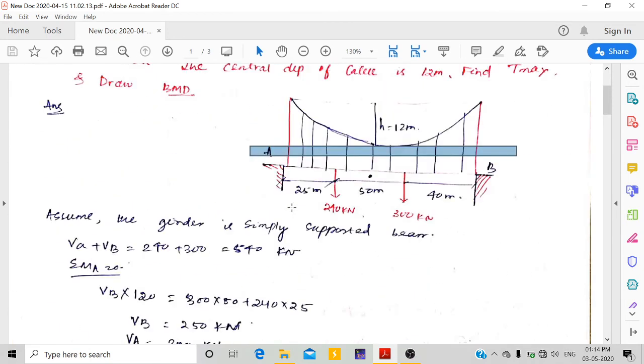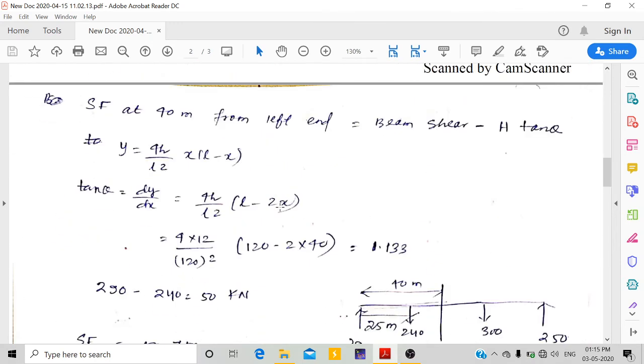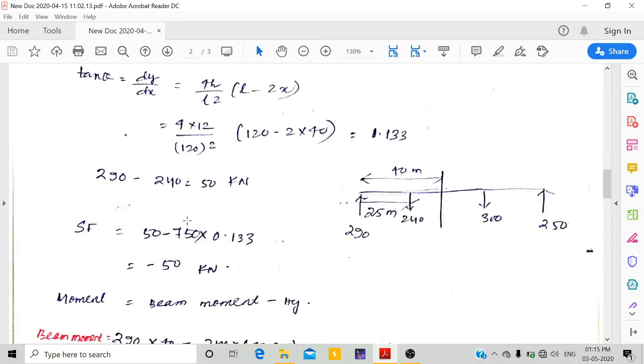The beam shear in the section is 290 minus 240, which is 50. So 50 minus 750 times 0.133 gives minus 50 kN shear force.